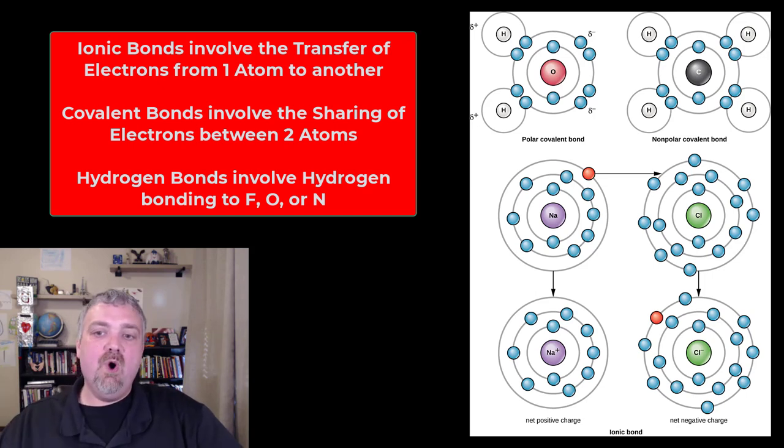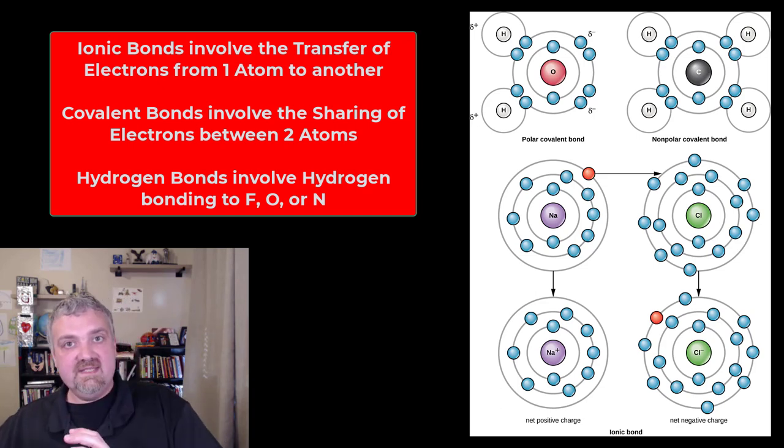You'll see here that sodium has that one electron in its outer shell. So it gets rid of that extra electron, so now its outer shell is full. Chlorine really needs one electron, so it's going to take it. So now sodium has made itself happy by getting rid of the one extra electron. Chlorine has made itself happy by gaining an electron.